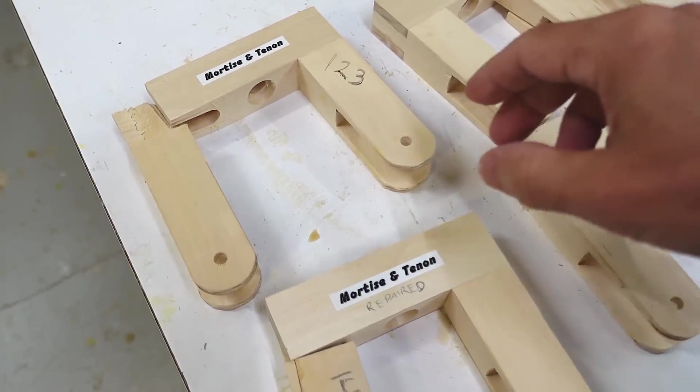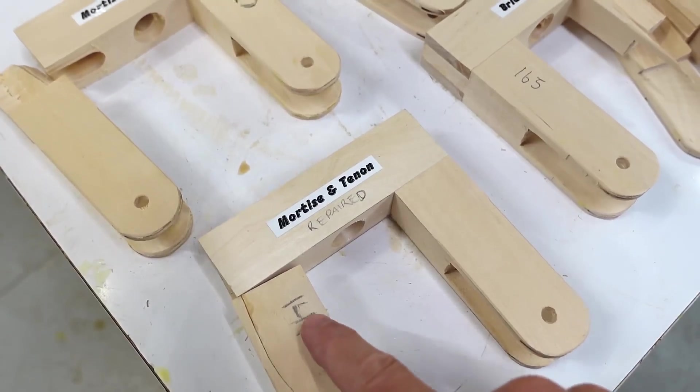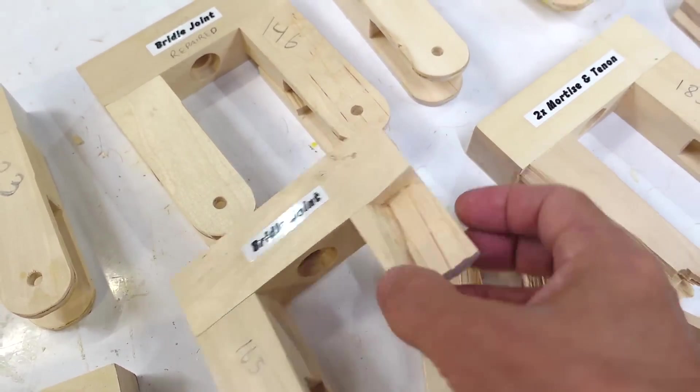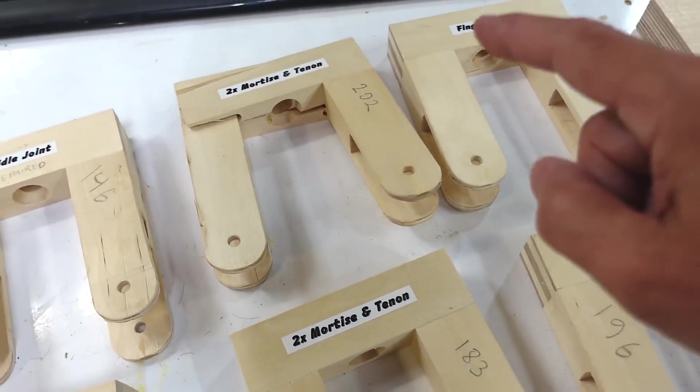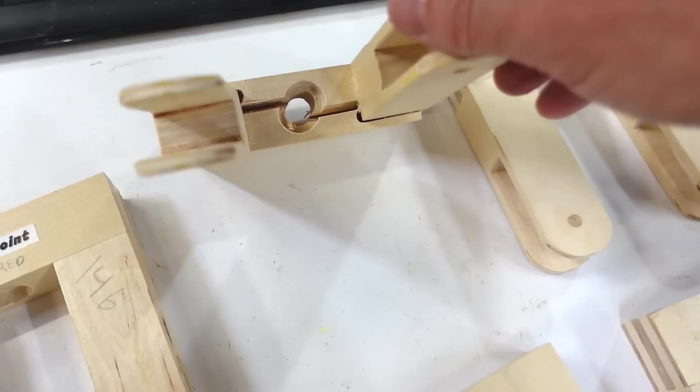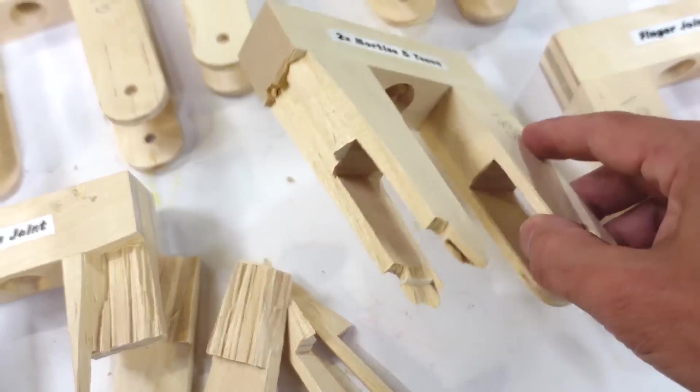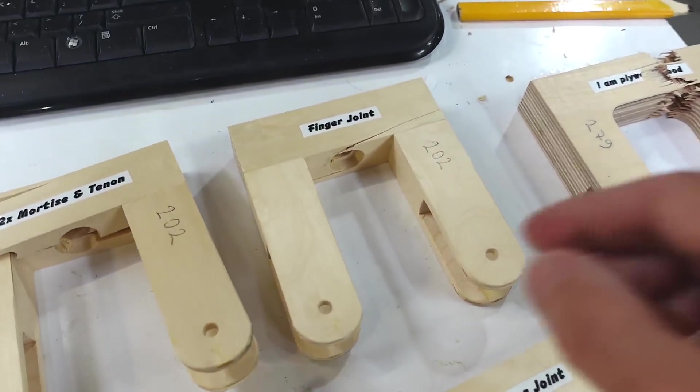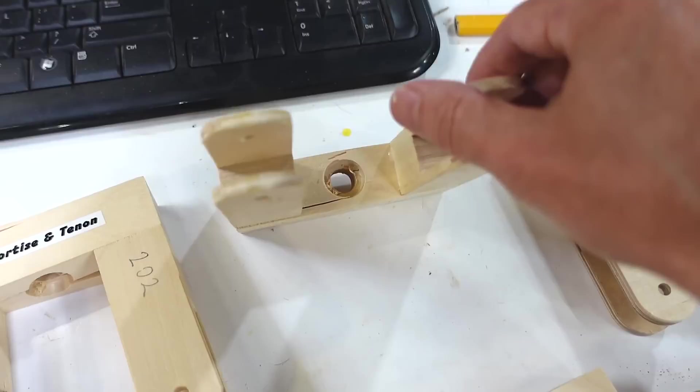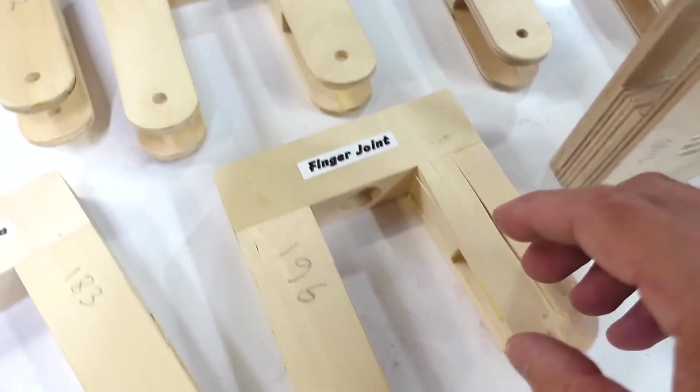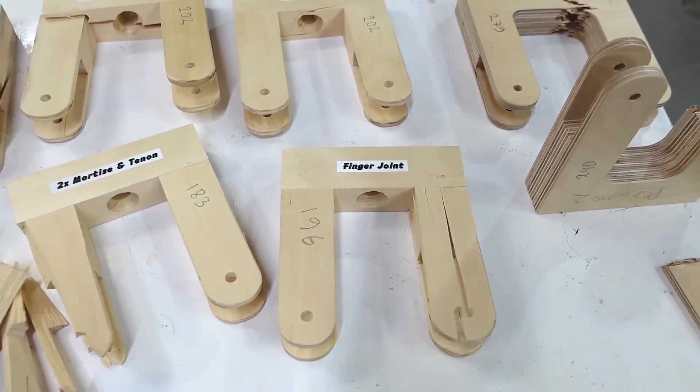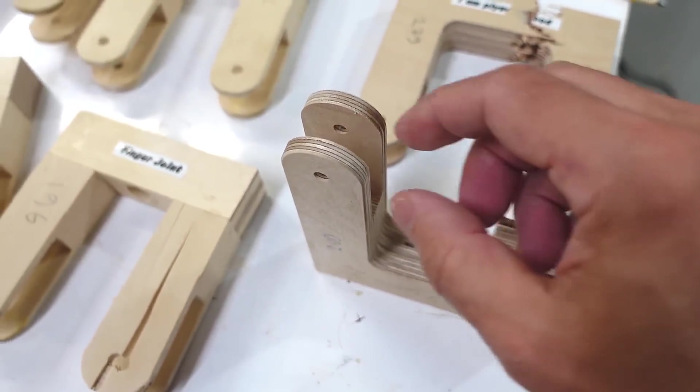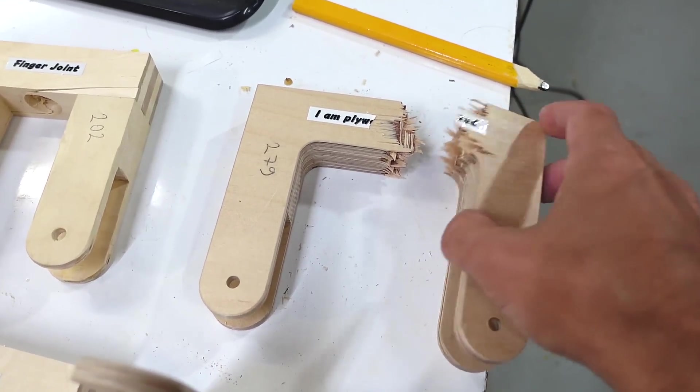The single mortise and tenon failed the earliest both pulling out at 123 and 141. Next, the bridle joint. Both of these failed with the wood splitting apart here. Then, the double mortise and tenon joints - one failed around the hole and the other one had this part break. I guess the reinforcement wasn't strong enough. And, the finger joint, this one here failed pretty much the same way. This one split around the hole and this one failed at the reinforcement. But, the strongest failures was the plywood parts.